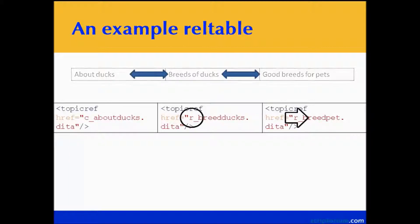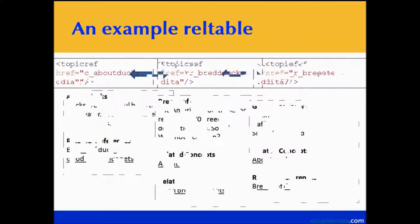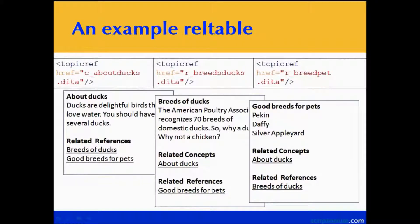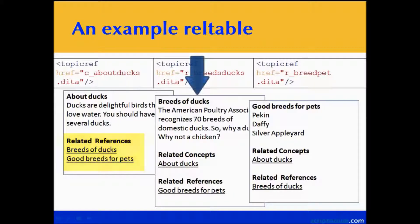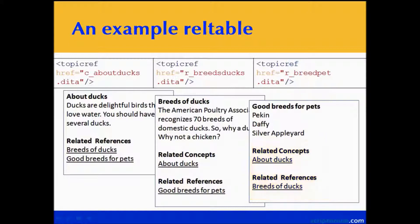We're going to see something really interesting when we do the transform. The About Ducks topic will give us related references, because the other two topics are reference topics. The Breeds of Ducks topic will give us one related concept heading with the related concept, because About Ducks is a concept, and one related reference, because the other topic is a reference topic. Similarly for Good Breeds for Pets.